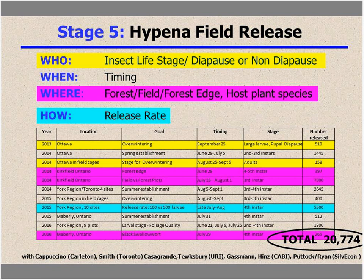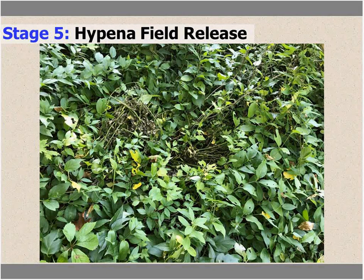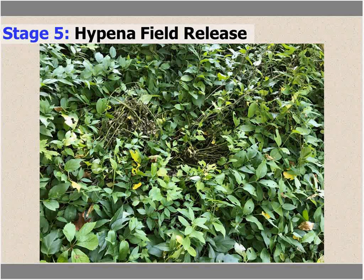This is what a field release looks like: you get this defoliation in the leaves from larvae feeding. There's nothing else that will defoliate DSV in quite this way — in some cases slugs can cause some damage, but this pattern of feeding on leaves is distinctive to Hypena. So if you see this, this moth is in the area.